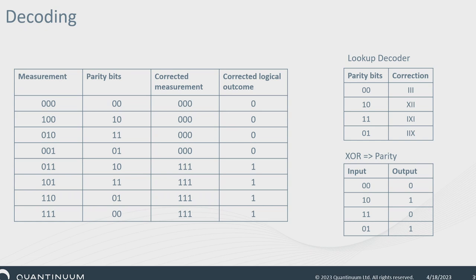Here's an example: take the measurement and deduce the bits by XOR-ing the first two and then the second two. Then the corrected measurement uses those parity bits — look up what to flip. For instance, with syndrome (1,0), flip the first bit; if the measurement was 1,0,0, flipping the first bit gives 0,0,0, and XOR-ing the entire string gives zero. These rules turn out to be effectively the same thing as majority voting — just encoded differently.